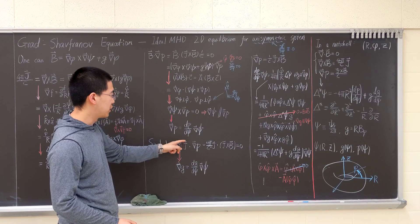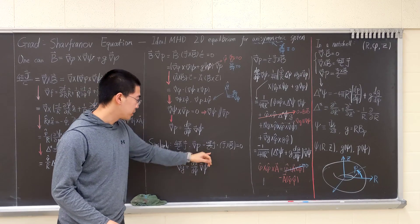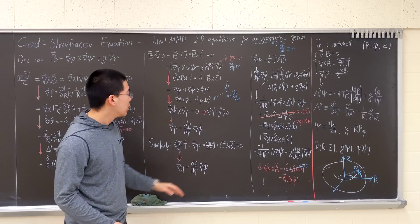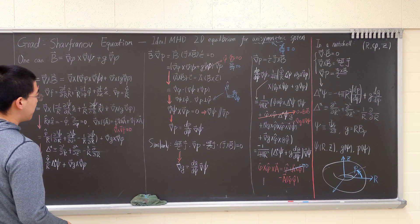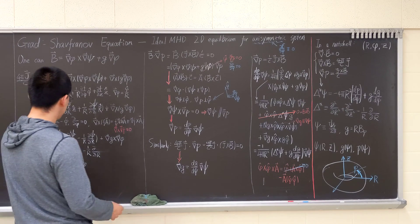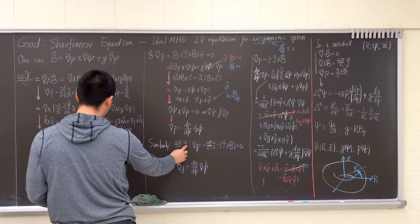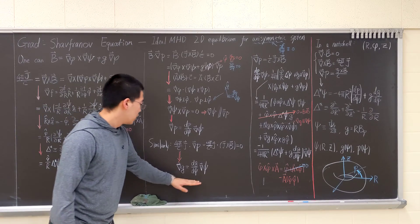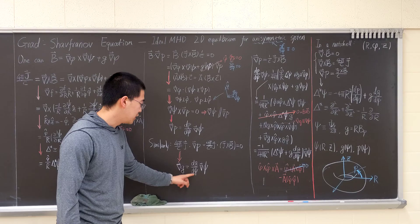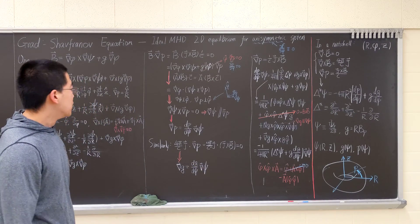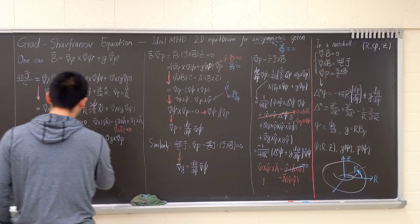By a similar idea, we multiply J on both sides. Then we can express grad G as dG/dpsi times grad psi. So we have these three equations and this expression — those are the definitions of the magnetic field. We merge all four of those expressions together into the force balance.